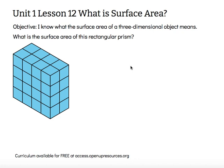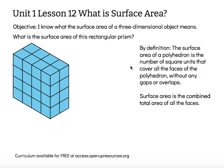What is the surface area of this rectangular prism? By definition, the surface area of a polyhedron is the number of square units that cover all the faces of the polyhedron without any gaps or overlaps. So as if I were to paint the outside of this polyhedron, I would paint every single part of all the faces, covering it with exactly one layer without gaps or overlaps.